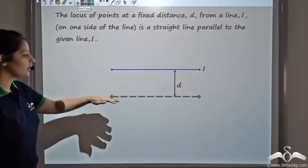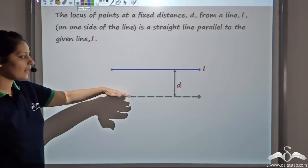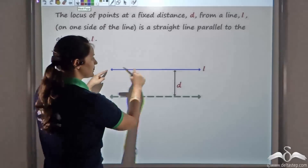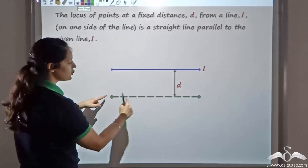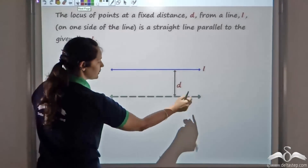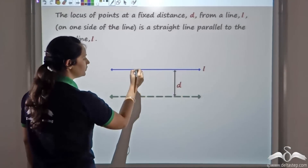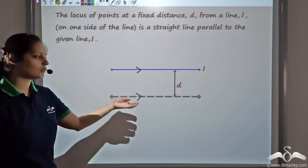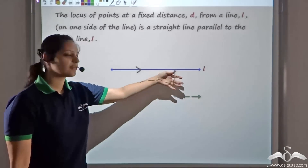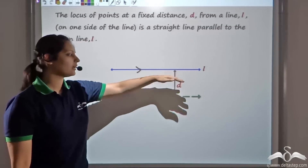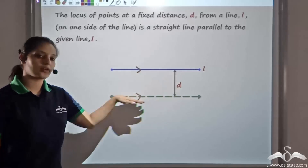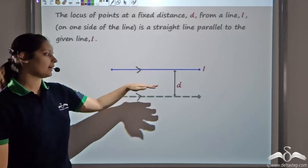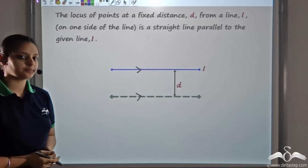So the locus of all such points that are at a fixed distance D away from this line L gives you a straight line which is parallel to line L. So this is what the locus of all points at a fixed distance away from a line is — a straight line which would be parallel to line L and a fixed distance away from it.